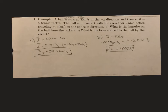We have an example problem where we have a ball, a mass of 0.75 kilograms, traveling 30 meters per second in the positive x direction. The ball is traveling at 30 meters per second initially, then strikes a tennis racket — here's a side view of a tennis racket. We know how long the ball is in contact with the racket, and then it comes back in the opposite direction. We want to know what the impulse on the ball was from the racket, and what the force applied to the ball by the racket is.